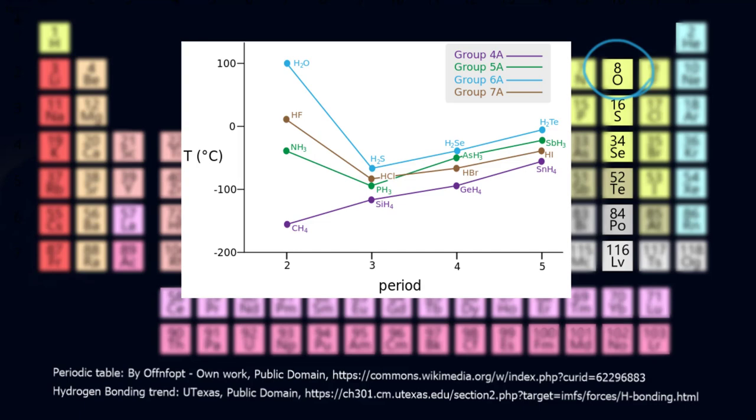This is hydrogen bonding in action, and we can see that it is present in hydrogen compounds with fluorine and nitrogen as well. If we look at the trend for the group 4 elements, however, we can see that there's no hydrogen bonding present with carbon. That's because carbon is not nearly as electronegative as nitrogen, fluorine, or oxygen, and so we don't see the effect of hydrogen bonding.